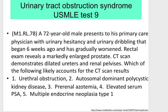Test 9: A 72-year-old male presents with urinary hesitancy and dribbling that began six weeks ago and has gradually worsened. Rectal exam reveals a markedly large prostate. CT scan demonstrates dilated ureters and renal pelvises. Which of the following likely accounts for the CT scan results? (1) Ureteral obstruction, (2) Autosomal dominant polycystic kidney disease, (3) Pre-renal azotemia, (4) Elevated serum PSA, (5) Multiple endocrine neoplasia type 1.